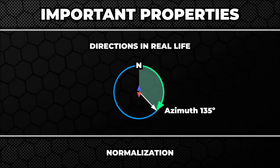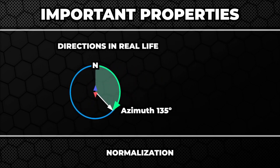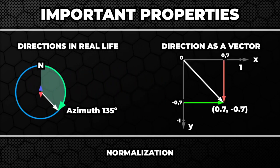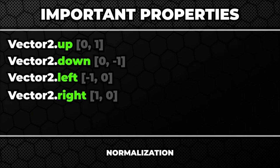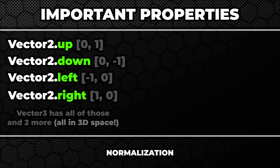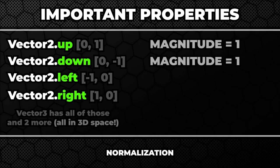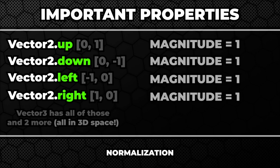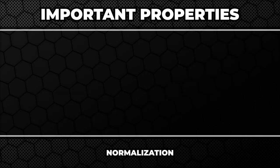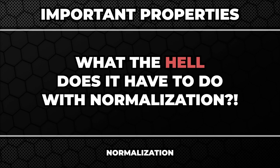Usually when we describe direction we do it using angles. But we could do it also using x, y and z components. In fact, it is so common that vectors contain several static variables describing the most used directions. If you look closely, you will see they have something in common — their magnitude is 1. This makes it very easy to work with them in a variety of situations, and you will see some of them later in this video.